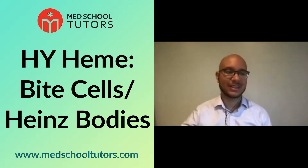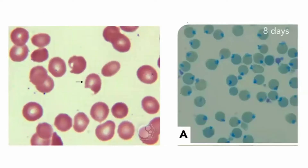What are we looking at here, folks? Folks are putting both the finding and the diagnosis in the chat — so good. On the left, the arrow is absolutely pointing to a bite cell. And on the right, we see Heinz bodies. Some of you in the chat have the image on the left, the image on the right, and you have the disease.